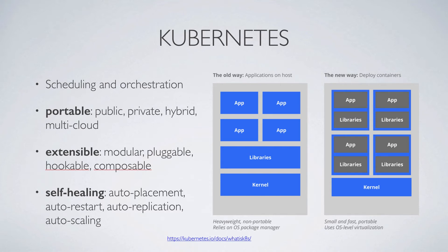So one of the first things that Kubernetes provides is scheduling and orchestration. In other words, given a pool of compute resources under Kubernetes control, Kubernetes will take care of deciding where and when to run containers, and ensuring that networking and other aspects of the container lifecycle are managed properly.